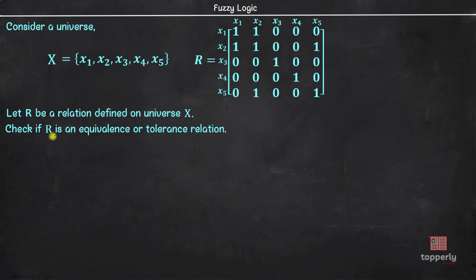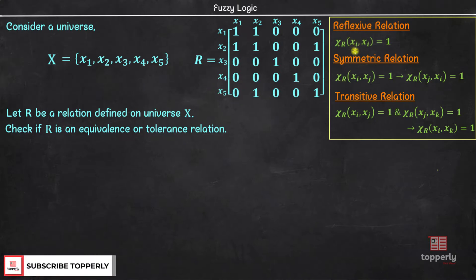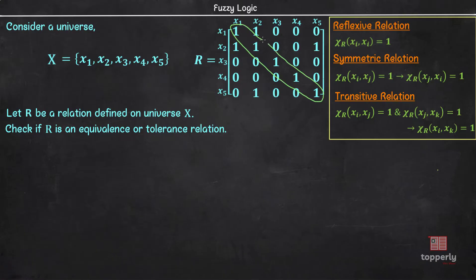We are asked to check if R is an equivalence or tolerance relation. First, let us check for reflexive, symmetric, and transitive properties of relation R. We know that relation R is reflexive if the membership value of ordered pairs (Xi, Xi) is equal to 1. The (Xi, Xi) pairs are the diagonal elements of this relation R — that is, (X1,X1), (X2,X2), (X3,X3), (X4,X4), and (X5,X5). Since the membership values of all diagonal elements are 1, the condition for a reflexive relation is satisfied. Therefore, R is a reflexive relation.